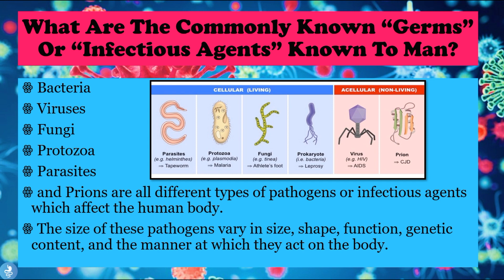What are the most commonly known germs or infectious agents? The most common ones we know are bacteria, viruses, fungi, protozoa, parasites, and prions. These are all different types of pathogens or infectious agents which can affect the human body. The size of these pathogens may vary in size, shape, function, genetic content, and the manner in which they act upon the body.